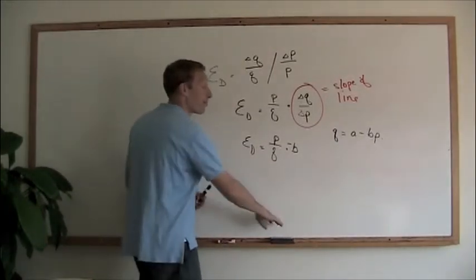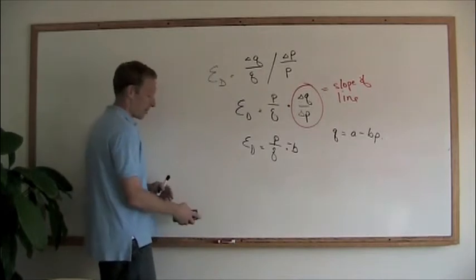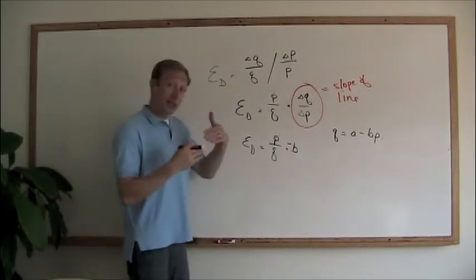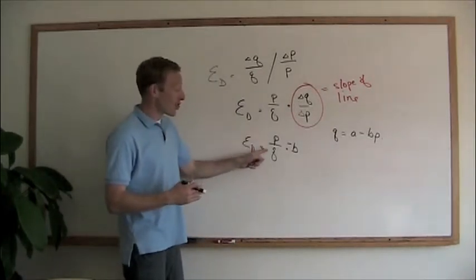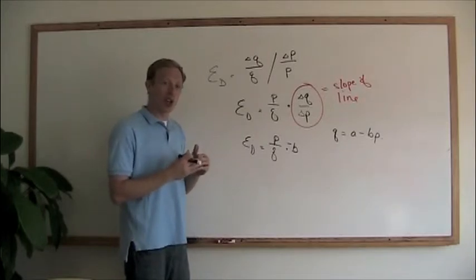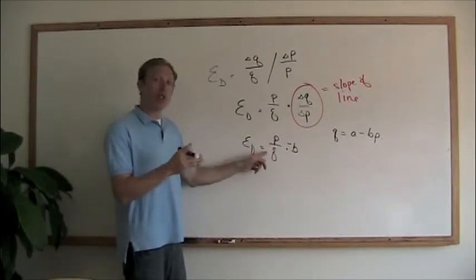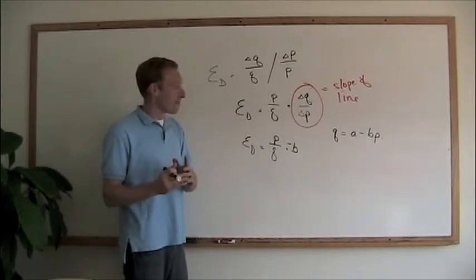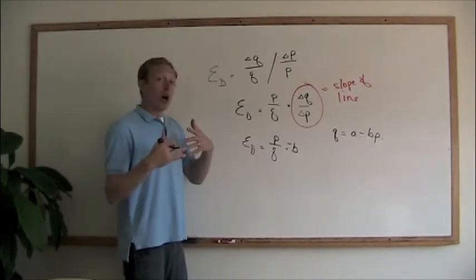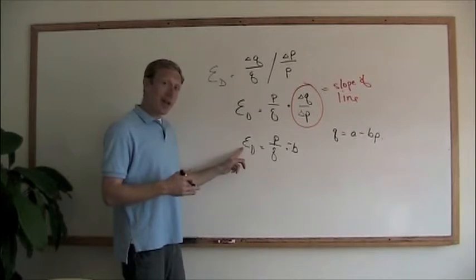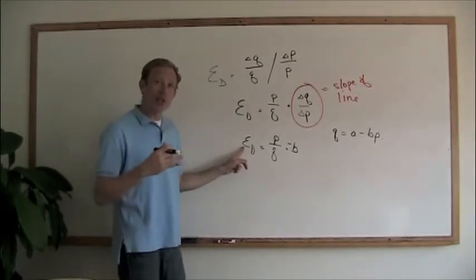And that leads us to another part of the elasticity. We know that on a demand curve there are prices and quantities that correspond to each other. The slope is constant, but the price and quantity are always changing along that line, which means that the elasticity of demand has to always change along the line.